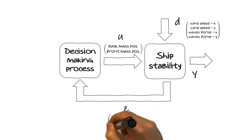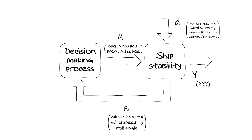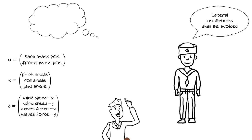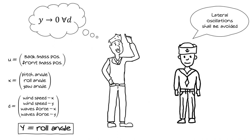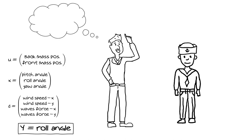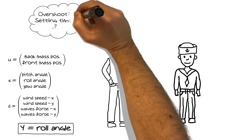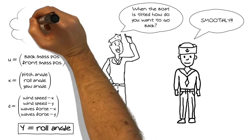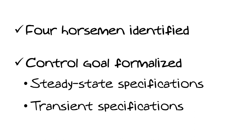Once we identify the four horsemen along with their ranges and units, we close the loop over our decision-making mechanism and specify steady state and transient specifications for the closed-loop system. We convert information from the stakeholder from natural language into mathematical language. We encode the requirement by defining the roll angle as performance output and writing that such output shall converge to zero and stay there, no matter the waves and wind. We also need to question stakeholders about transient specifications, translate their answers into mathematical form, and then we are set. The exercise is completed.